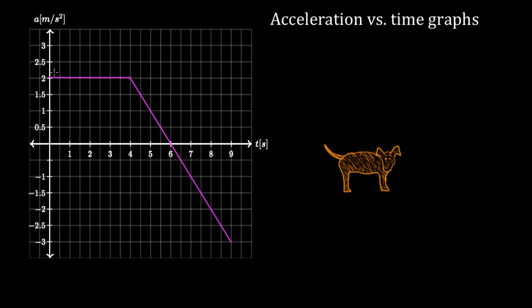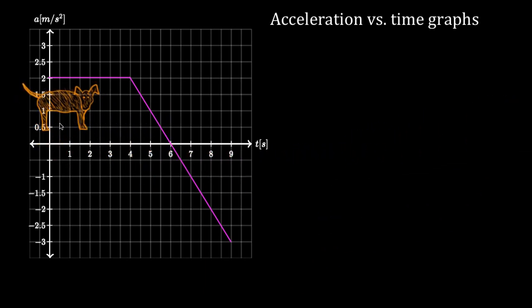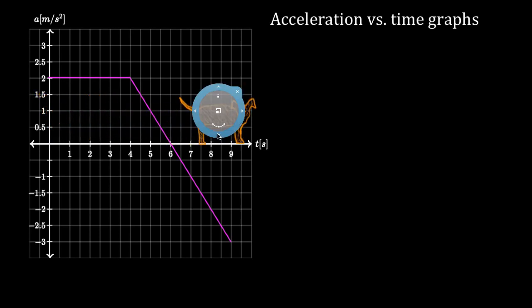Another reason is, if you wanted to know the motion of the object — let's say it was this doggie, Daisy — and Daisy was accelerating, you can't figure out the velocity directly from this graph unless you have some extra information. You'd have to know the velocity Daisy had at some moment in order to figure out the velocity at some other moment.